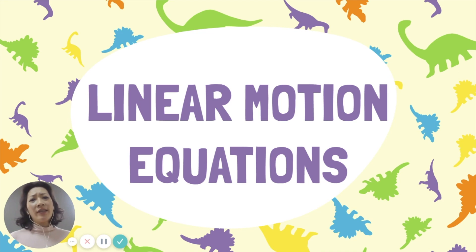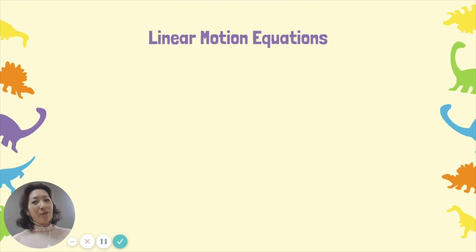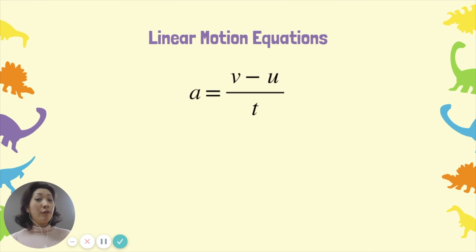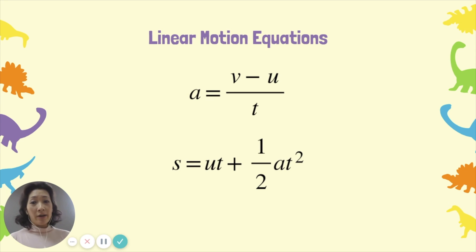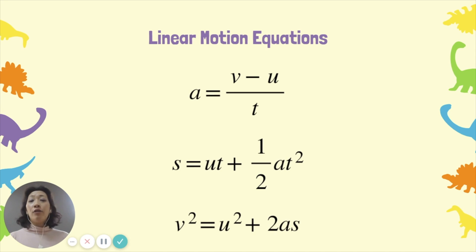What equations are we looking at? We're looking at these three: A equals V minus U over T, S equals UT plus half AT squared, and V squared equals U squared plus 2AS.